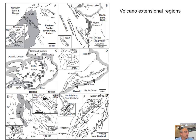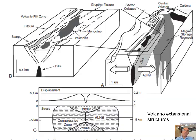Taupo is an intra-arc system — it's above the arc at the Hikurangi trough — so it's an example of extension associated with more intermediate-type volcanoes. The situation is that you have the volcano, but at depth there are dikes, and the dikes are really the subsurface plumbing of all the volcanic systems.